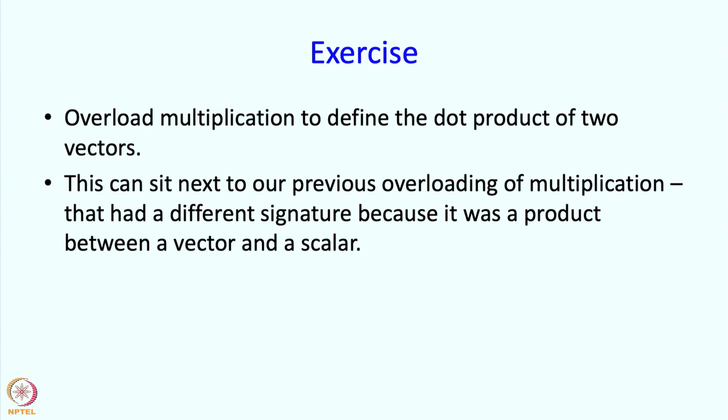This is going to be a V3 object and another V3 object and that is perfectly fine, that can sit next to our old definition because the signatures are different. And so when you write it in your code, C++ will know exactly which of those functions to use because it will look at the signatures and it will look at how many arguments, what kinds of arguments you have specified.